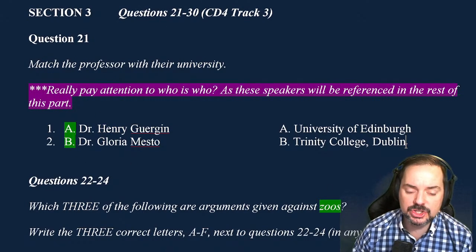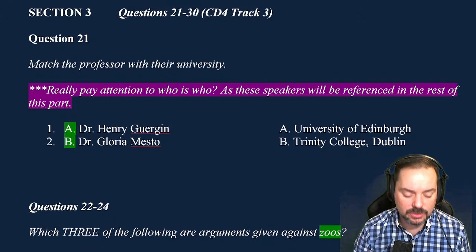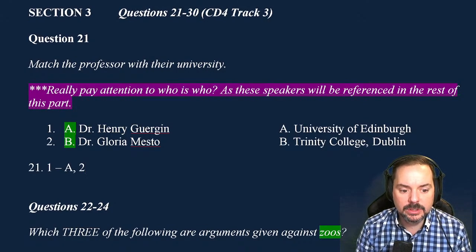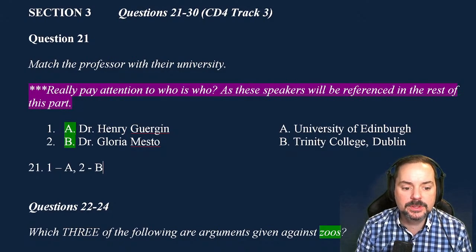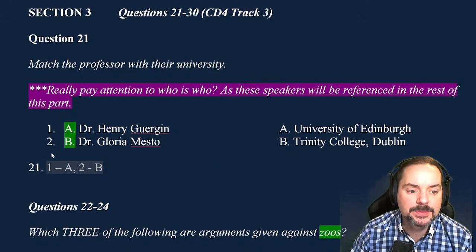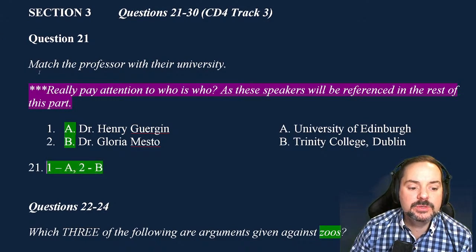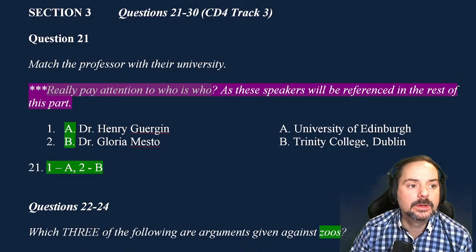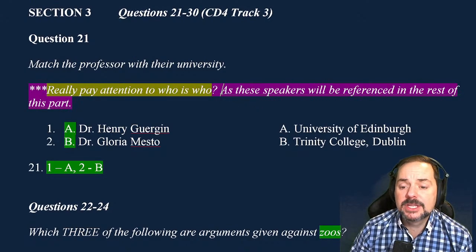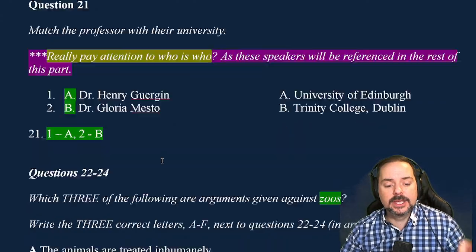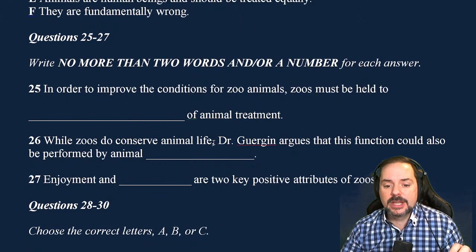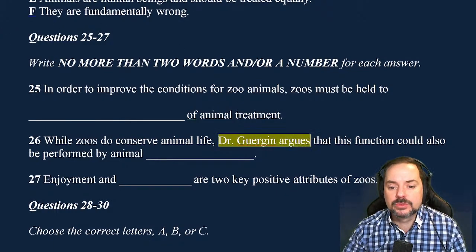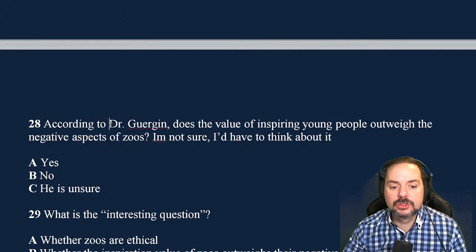For question 21, one is A and two is B. On your paper-based answer sheet, write question 21 as: one A, two B. Really pay attention to who these speakers are, because the speakers will be referenced in the rest of this part. You see their names in subsequent questions — like 'while zoos do conserve animal life, Dr. Henry Gergen argues' — so you need to know whose voice to listen for.